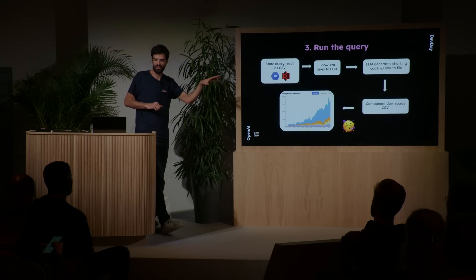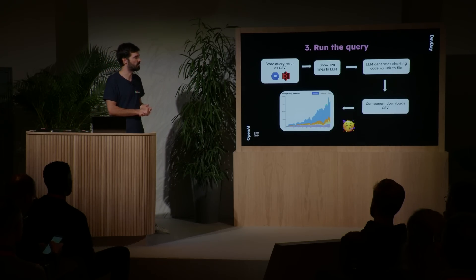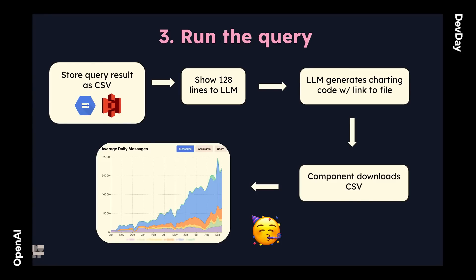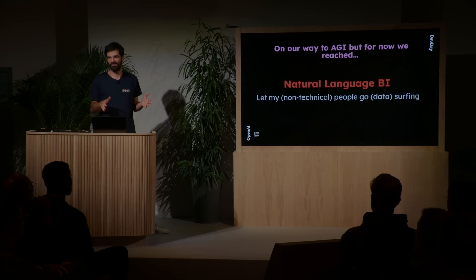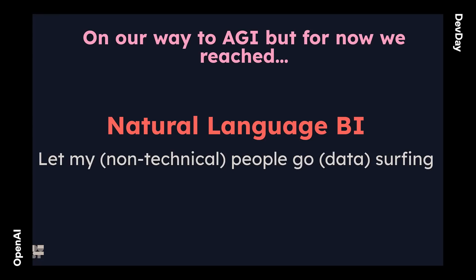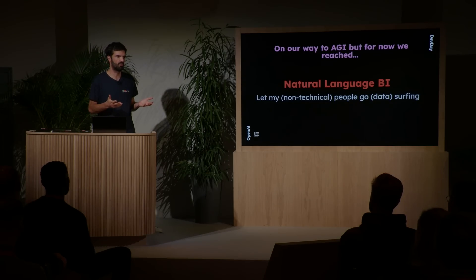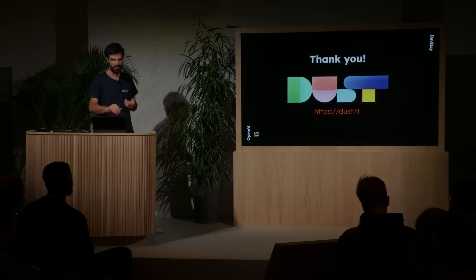To make sure the LLM understands the data structure of the result, we show it a few lines as well. Then the LLM generates charting code — we use Recharts and are implementing D3.js as well. This component downloads all the CSV files, and there we go — we've got our graph. The goal of everybody here is to reach AGI, but I think we've reached natural language BI on our side. This is used by a lot of non-technical teams to do BI they weren't able to do before. The time spent building a dashboard compared to just asking questions to your warehouse or to completely out-of-range files is really, really different. That's pretty much it — thank you very much.